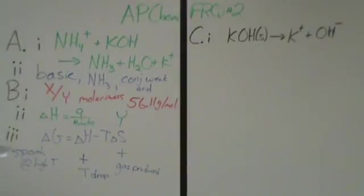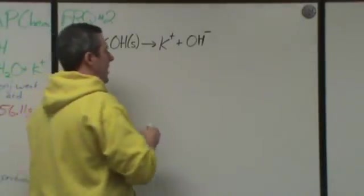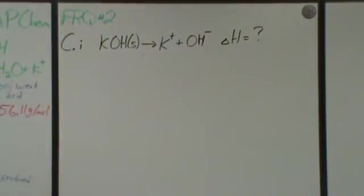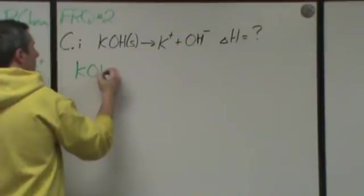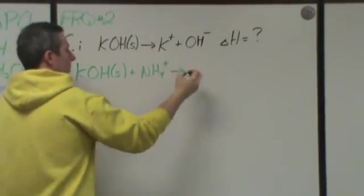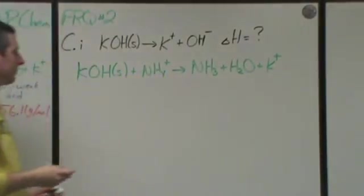In part C, it says they do an experiment where they do the reaction and they find the enthalpy. Then they do a second experiment, and they do the reaction in a slightly different manner. The question says show what you would do to figure out what the enthalpy change for this is. So we have an unknown enthalpy. What they're going to do is give you two reactions that can be manipulated to give you that reaction. In the first one, they have this solid potassium hydroxide plus the ammonium chloride, which will turn into ammonia, water, and K plus.